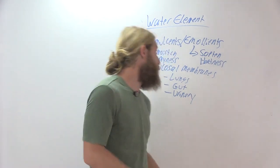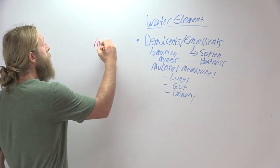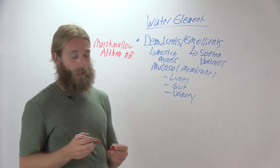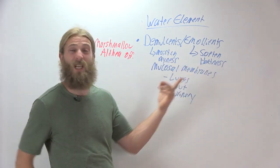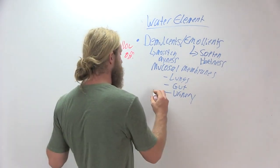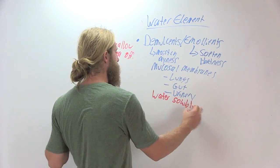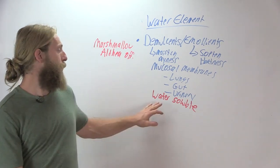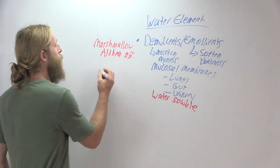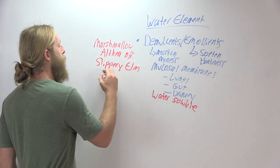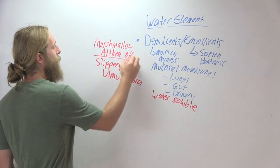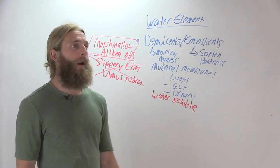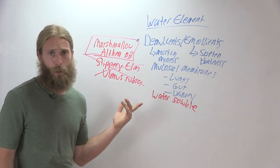Some of my top, my number one demulcent straight up is marshmallow, which is Althea officinalis. I use marshmallow a lot. The one thing about marshmallow and actually about many demulcents, not all, but many is that interestingly enough, they're only water soluble. And that's not true across the board, but for the most part, mucilaginous polysaccharides are not well extracted in alcohol. So what we see here is predominantly using herbs like marshmallow, or we also have slippery elm, and that's Ulmus rubra. I really prefer to use marshmallow because slippery elm has a little bit of a threatened ecological status. It's been on the United Plant Savers at risk list for a while.